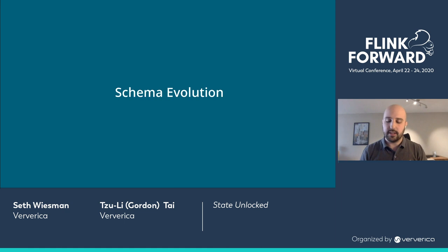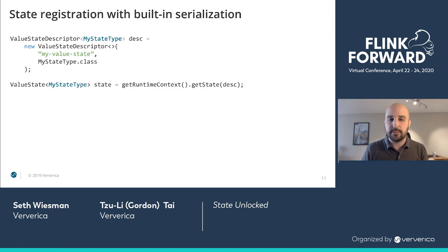This works really well if you are just making simple business logic changes — for example, filtering records with a value less than two, then wanting to filter with a value less than three. That just works. But what if your schema evolves? This is your ALTER TABLE statement. I was storing a long in state, and tomorrow I want to store two longs and a string. What happens? How do I do that?